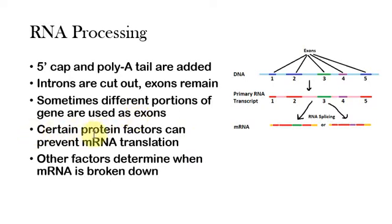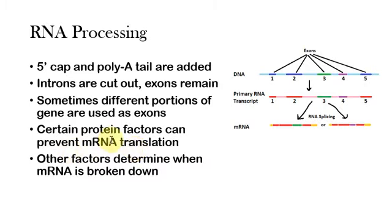There are certain protein factors that can prevent mRNA translation. Different proteins may attach to either the 5' cap or the poly-A tail, and other proteins can disable the ribosomes temporarily. So these protein factors can prevent mRNA from being translated, leaving messenger RNAs sitting in the cytosol waiting to be used. This happens a lot with unfertilized egg cells — they don't want to start growing until fertilized. But after fertilization, these protein factors can be eliminated and the messenger RNAs already present can instantly start being translated.